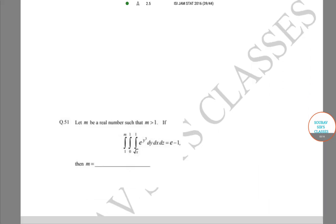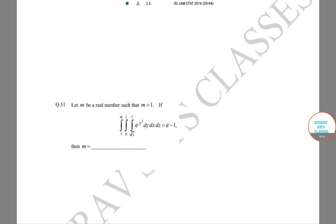Let m be a real number such that m > 1, and we have a triple integral to solve: integral from 1 to m, 0 to 1, and √x to 1 of e^(y³) dy dx dz. Let us see what it means for solving the integral over these three limits.